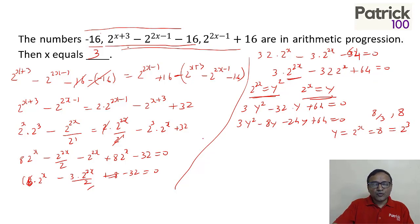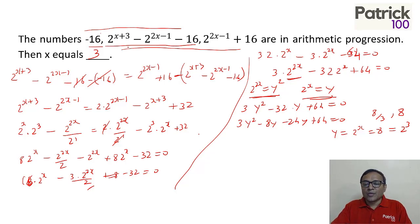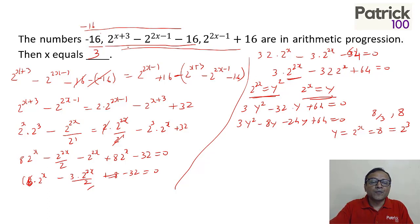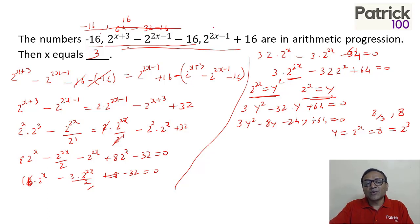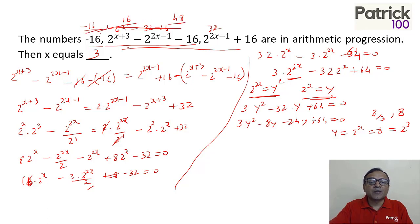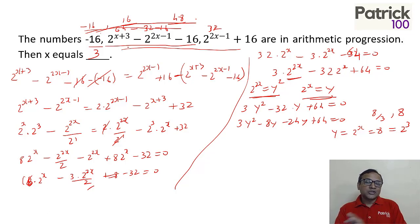So that's how you get the answer. If you substitute x = 3: 2^(3+3) = 64, 2^(2×3−1) = 2^5 = 32, and 2^(3) minus 1 plus 16 = 48. So minus 16, plus 16, plus 48 are in arithmetic progression — it satisfies. If you're comfortable with trial and error you can do that, else solve the whole equation to get x = 3.